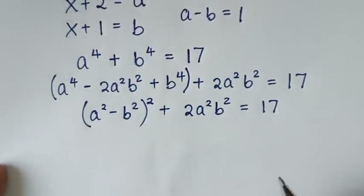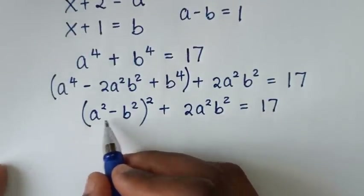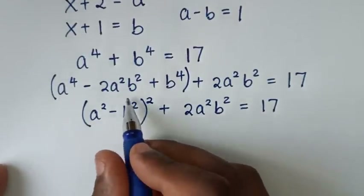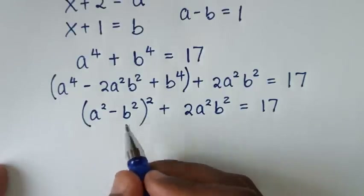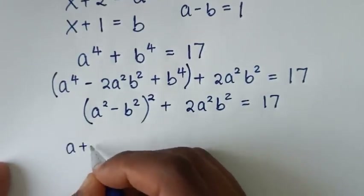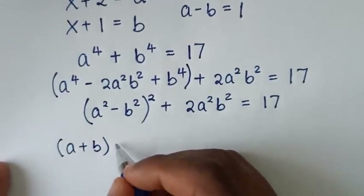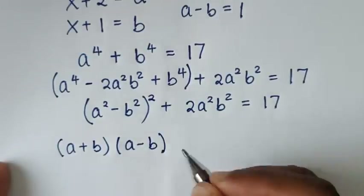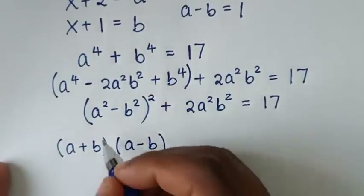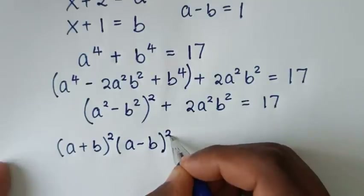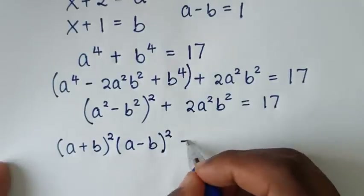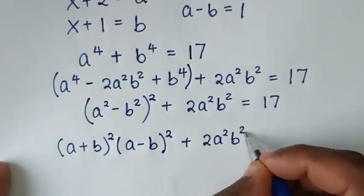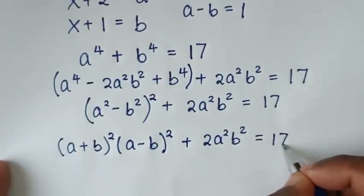Then in the next step, inside the bracket, a²-b² is in the form of a difference of squares, which is the same as (a+b)(a-b). But we have this squared here, so it will be [(a+b)(a-b)]² + 2a²b² = 17.